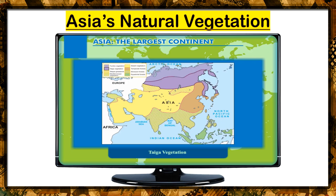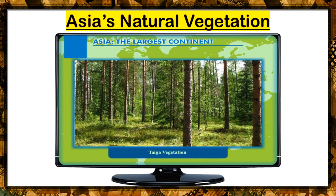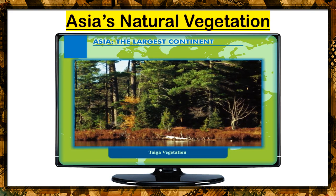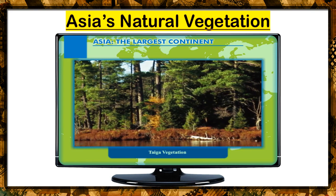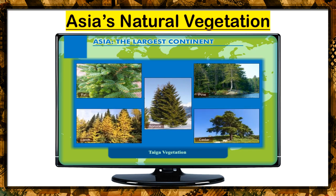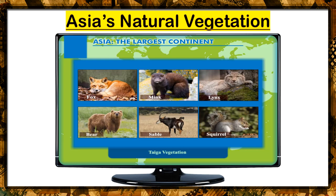Taiga vegetation is found in a broad belt in the central part of Siberia, located towards the south of the tundra. The coniferous trees are the main vegetation of this belt. The softwood evergreen trees that mainly grow in the taiga belt are fir, pine, spruce, cedar, and larch. Several fur-bearing animals found in this region are fox, bear, sable, mink, lynx, and squirrel.